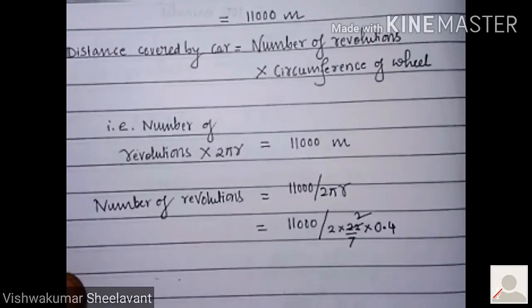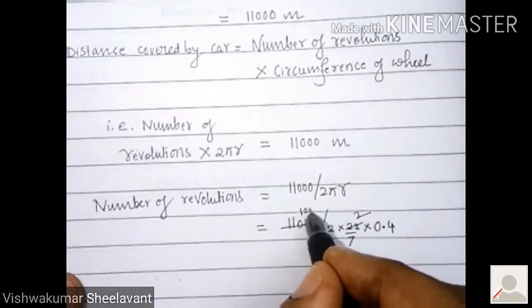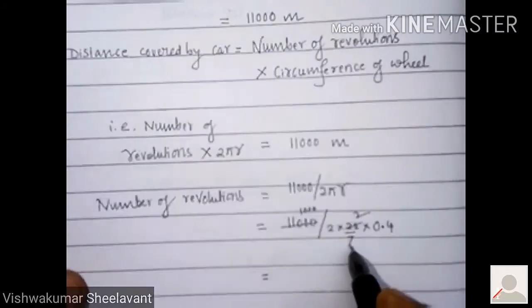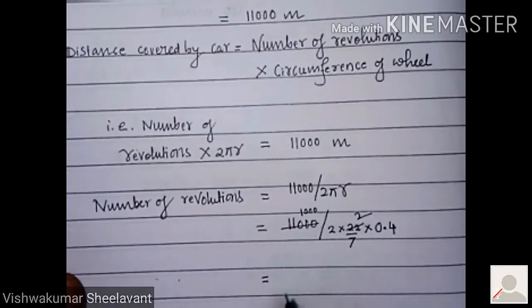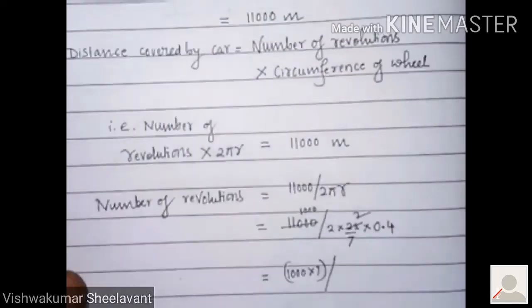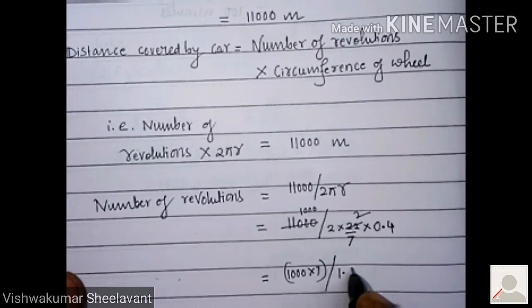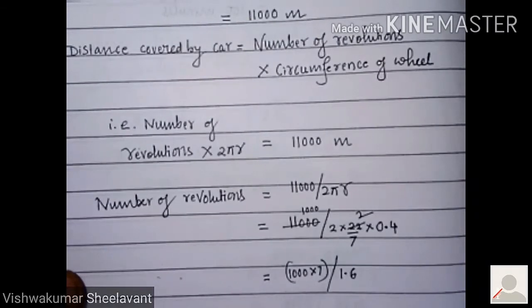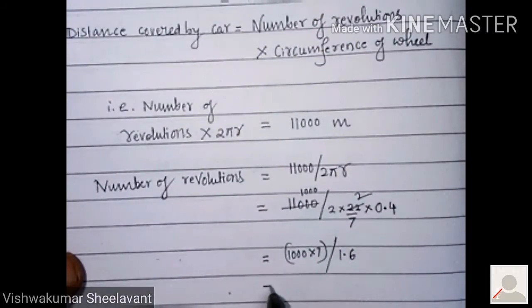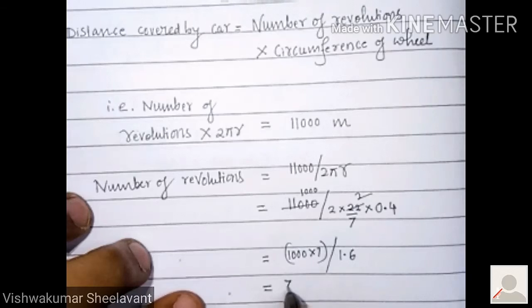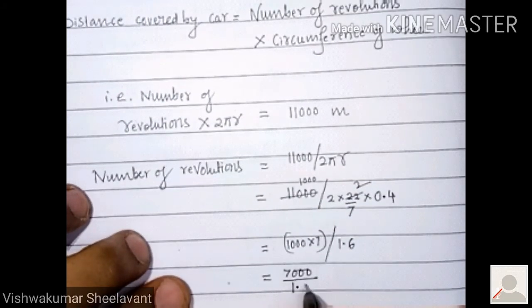Number of revolutions is equal to 11,000... Now this 7 we can take to the numerator and multiply with 11,000. We get 11,000 times 7 divided by 44 times 0.4. That will be 1.6. So 7,000 divided by 1.6.